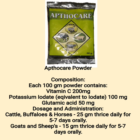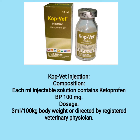Dosage and administration of Apthocryl powder: cattle, buffaloes and horses — 25 grams, thrice daily for 5 to 7 days orally. Goats and sheep — 15 grams, thrice daily for 5 to 7 days orally.